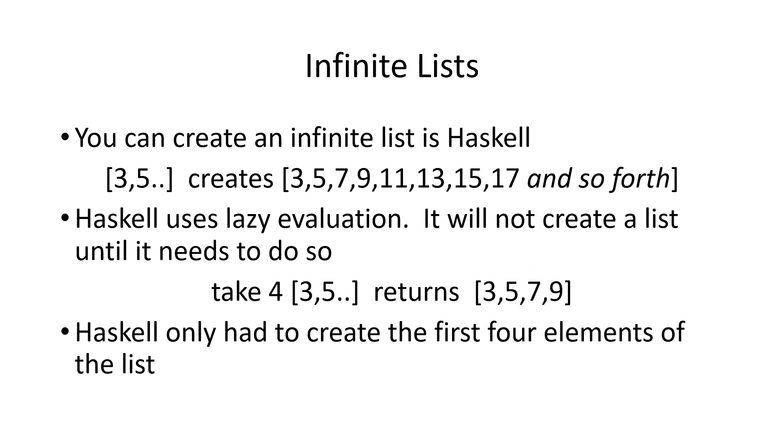Haskell uses lazy evaluation, so it will not create that list until it needs to. The take method returns another string that has the first, in this case, 4 elements of the list. So we can define the infinite list, 3 comma 5 dot dot, which goes all the way up to infinity. But we only need the first 4 elements, so it will return 3, 5, 7, 9.